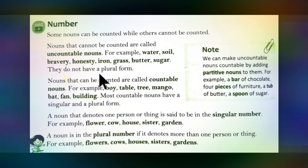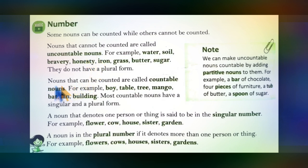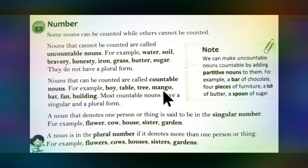Uncountable nouns do not have a plural form. The next category is countable nouns — nouns that can be counted. For example: boy, table, tree, mango, bat, fan, and building. These are all examples of countable nouns.